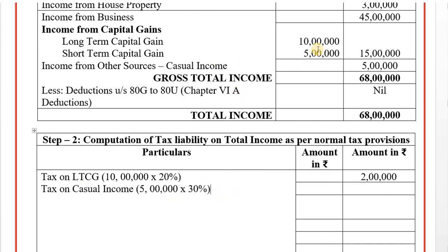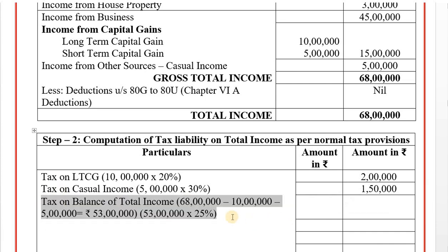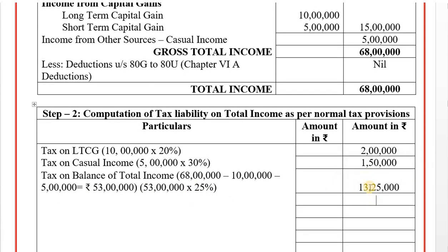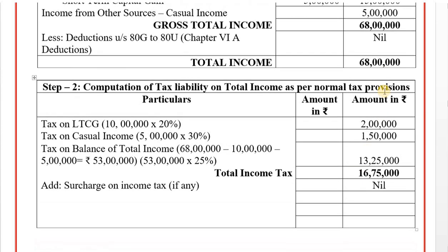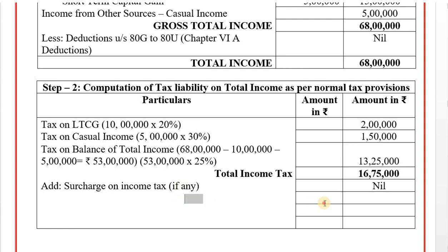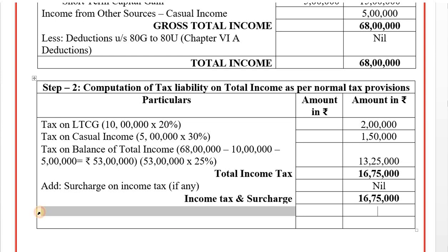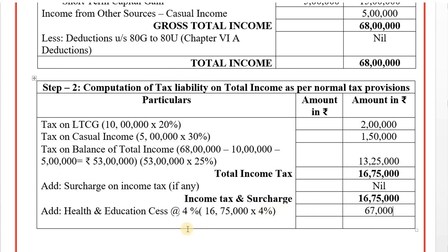Tax on casual income at 30% equals 1.5 lakhs. Tax on balance of total income: 68 lakhs minus 10 lakhs (LTCG) minus 5 lakhs (other sources) equals 53 lakhs at 25%, coming to 13,25,000. Total tax is 16,75,000. Surcharge is nil as total income is less than 1 crore. Health and education cess at 4% on 16,75,000 equals 67,000. Total tax on total income: 17,42,000. This is step number 2.